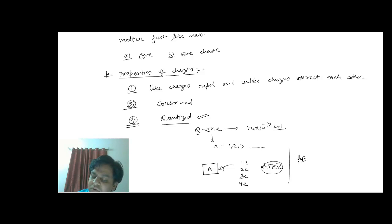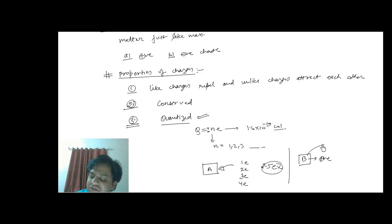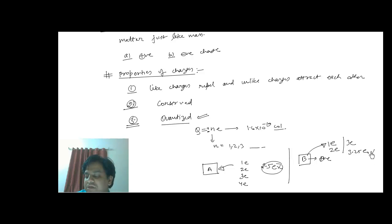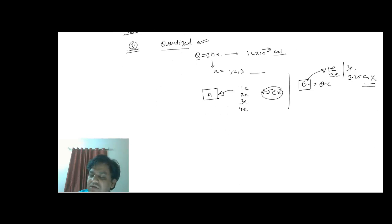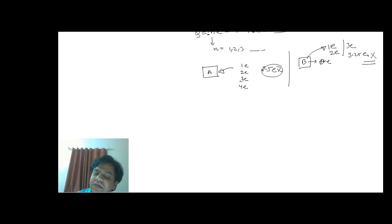Similarly, if I want to make object B positively charged, I will extract either 1, 2, or 3 electrons from it — I cannot take out 3.25 electrons. So, the charge acquired by an object is always in the form of integral multiples of the charge of an electron.